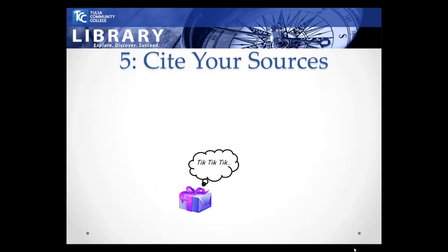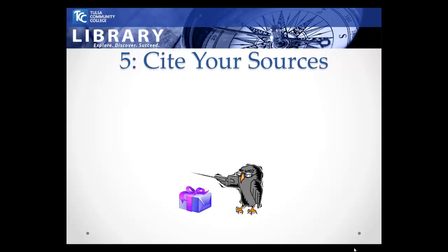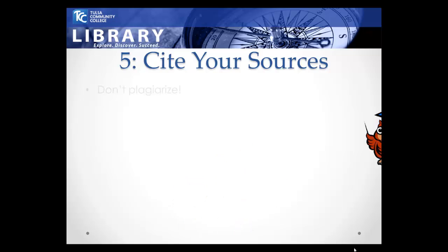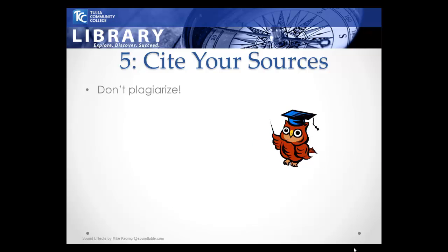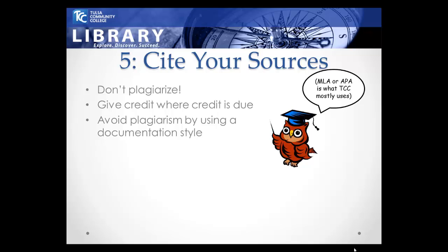Step 5: Cite Your Sources Properly. It is very important to use information legally and ethically. Plagiarism can occur intentionally or unintentionally and violates the TCC Student Code of Conduct. Be sure to give credit to the people whose ideas you use and do not pass off someone else's work as your own. Citation gives credit to those from whom you get your information — people spend a substantial amount of time on research and would appreciate the acknowledgement. You can easily avoid plagiarism by documenting your sources with complete citations in a works cited list or bibliography. Your instructor will tell you which format to use.